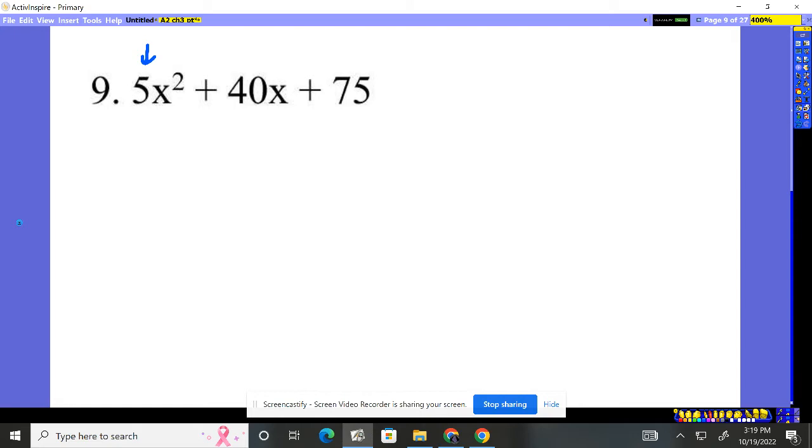5, 40, 75, yes, there's a greatest common factor of 5 there. So I'm going to factor the 5 out. 5 times what gives you 5x squared? x squared. 5 times what is 40x? 8x. And 5 times what is 75? You might need a calculator to do 75 divided by 5 and see that that's 15. 5 times 15 is 75.